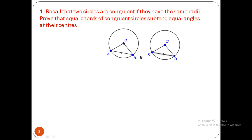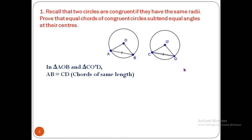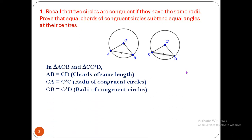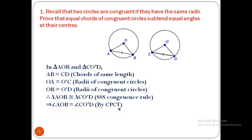We compare triangles AOB and CO′D. In triangle AOB and triangle CO′D: AB = CD (given), OA = O′C (radii of congruent circles), OB = O′D (radii of congruent circles). Therefore triangle AOB is congruent to triangle CO′D by SSS congruence rule. Hence angle AOB = angle CO′D by CPCT. Whether the chords belong to congruent circles or the same circle, the result is the same.